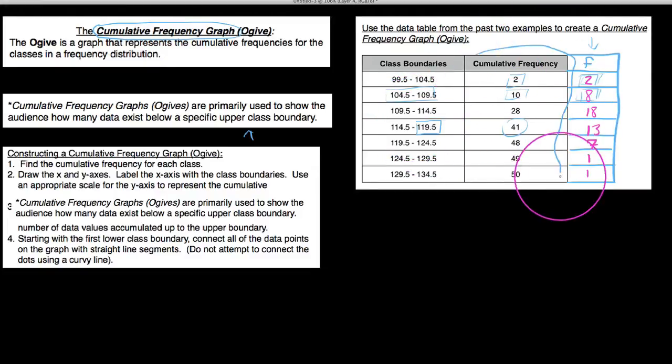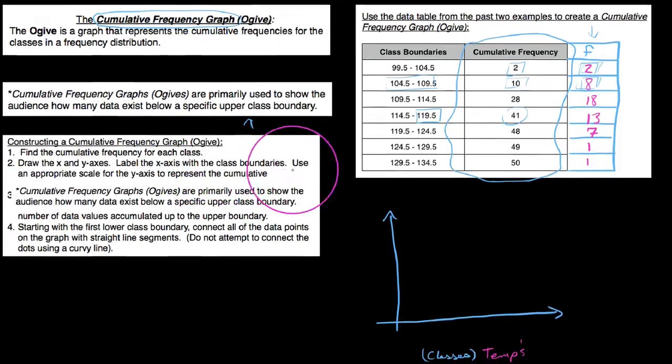So we want to graph the cumulative frequency when it comes to an ogive. We've already found number one here is find the cumulative frequency, but number two is draw our x and y axes. We say x and y axis, let's get a few things straight here. Down here at the bottom we have our classes. We're not going to label it classes, but that's what these are. We're going to label it temperatures.